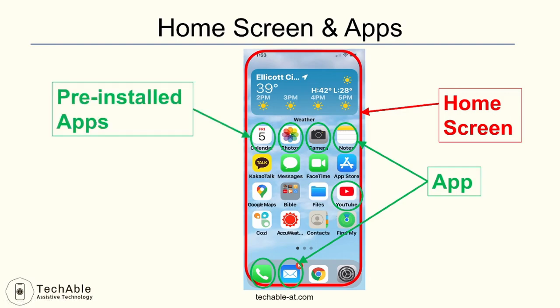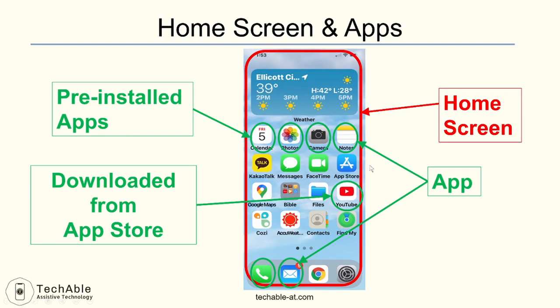There are apps that are already included and shown on the phone when you buy it, like the phone app, calendar app, camera app, and photos app. But some apps, like the YouTube app, might not be on the phone when you buy it. In that case, you need to get the app you want from a store where collections of apps are available. This process of bringing the app from the store to your phone is called download and install.